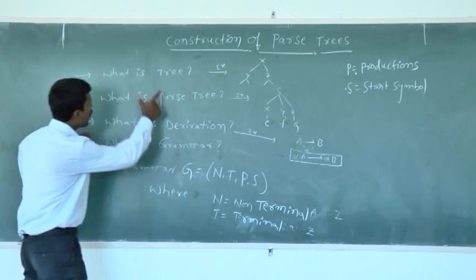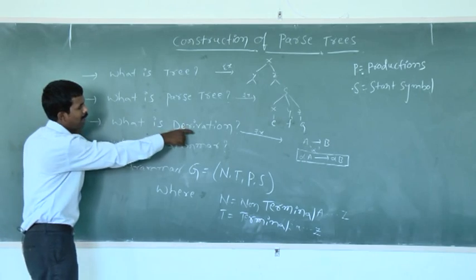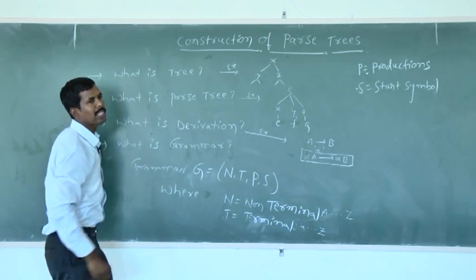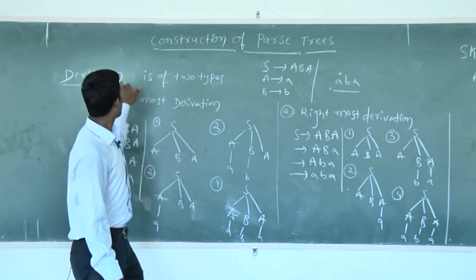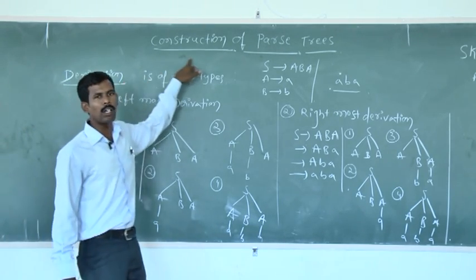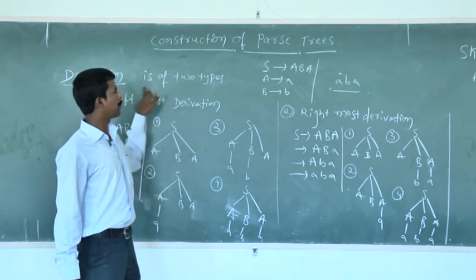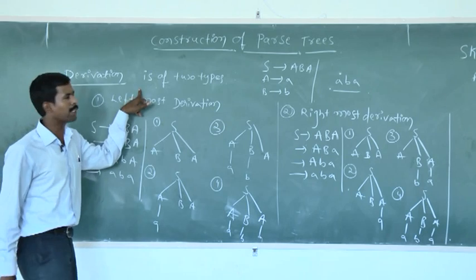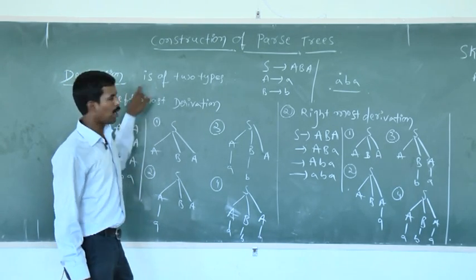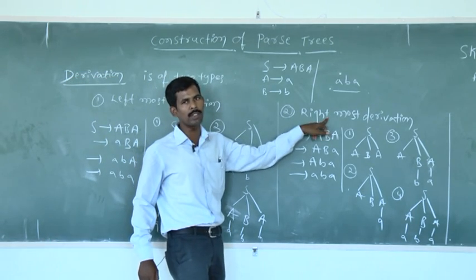When we want to construct a parse tree, we first have to take a derivation. The derivation is of two types, and it plays an important role in the design of parse trees especially in compilers. Depending on the replacement of the non-terminal, the derivation is of two types: one is called the leftmost derivation, and the other is called the rightmost derivation.